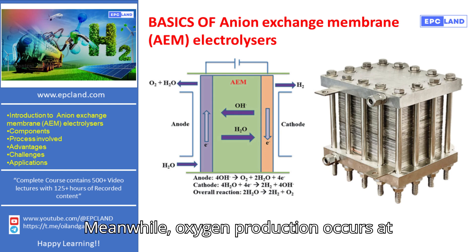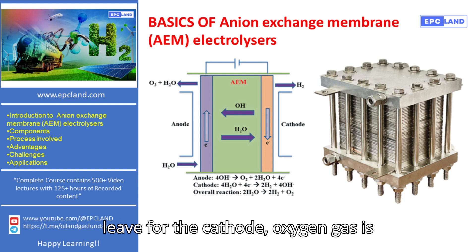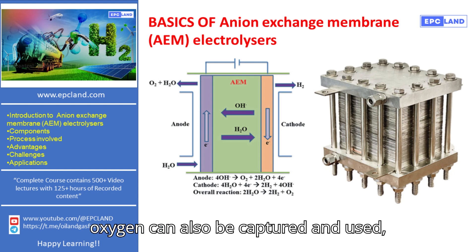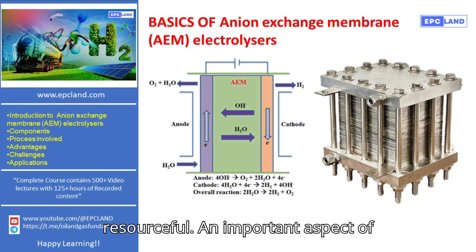Meanwhile, oxygen production occurs at the anode. As the hydroxide ions leave for the cathode, oxygen gas is released at the anode side. This oxygen can also be captured and used, making the process efficient and resourceful.